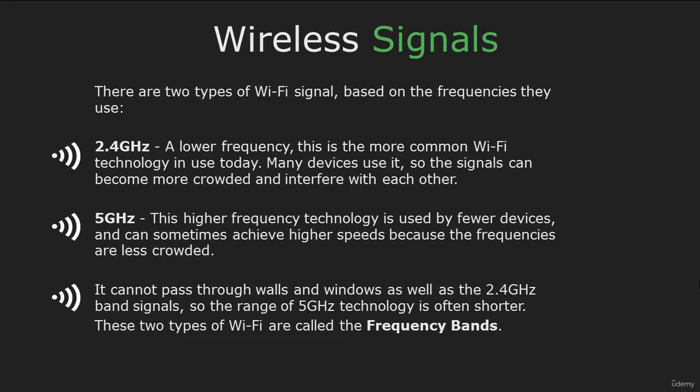There are two types of Wi-Fi signal. 2.4 GHz is a lower frequency and is the more common Wi-Fi technology in use today. And the 5 GHz is a higher frequency used by fewer devices, but can achieve higher speeds, though the range is also shorter.